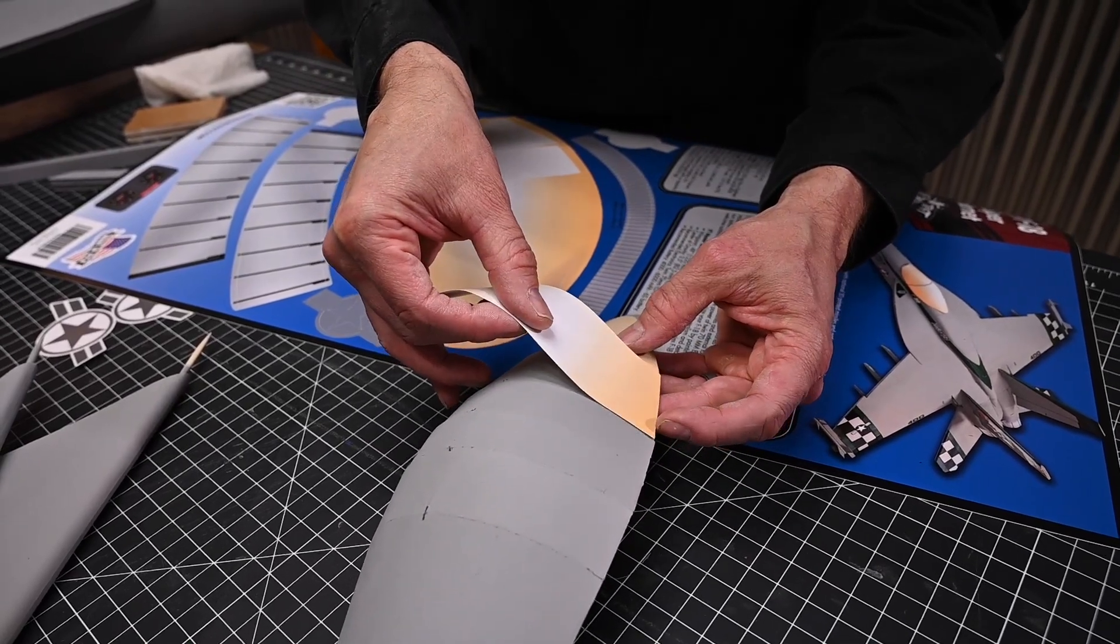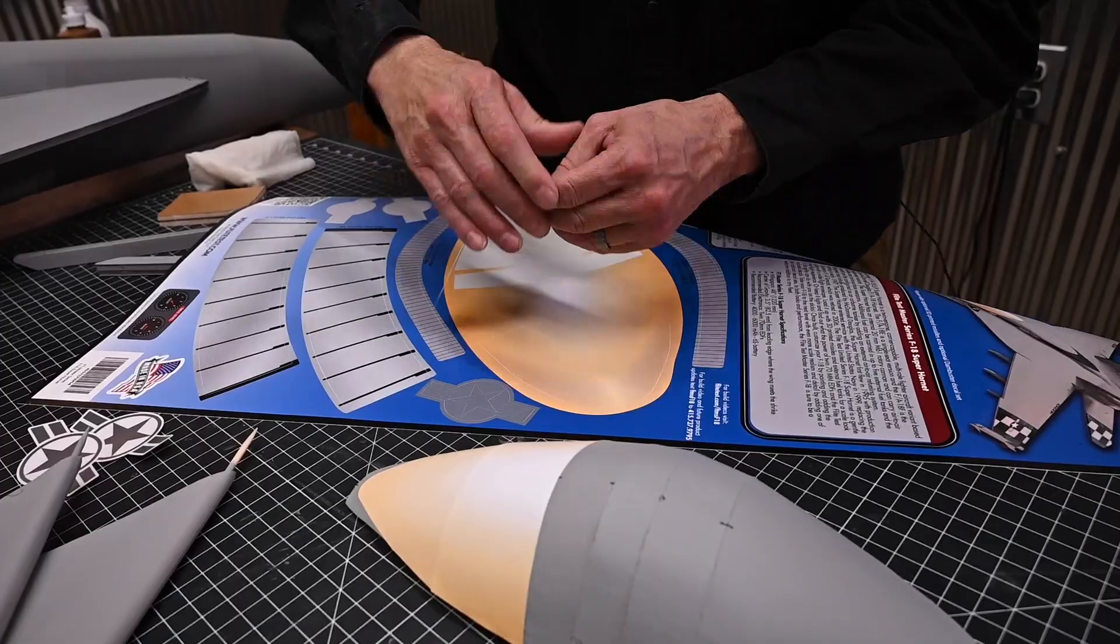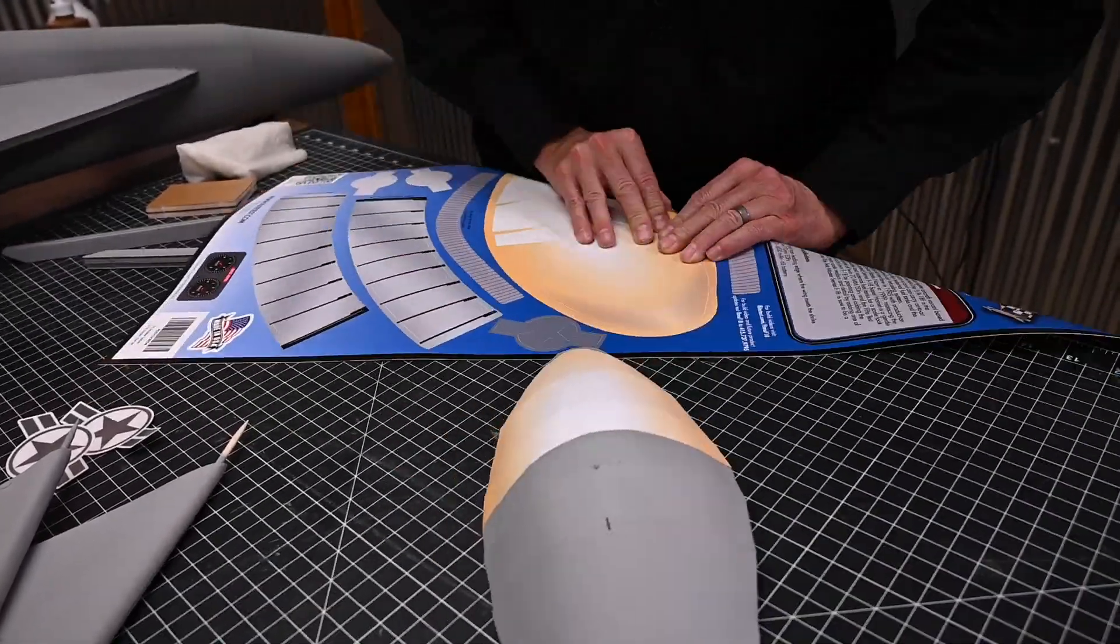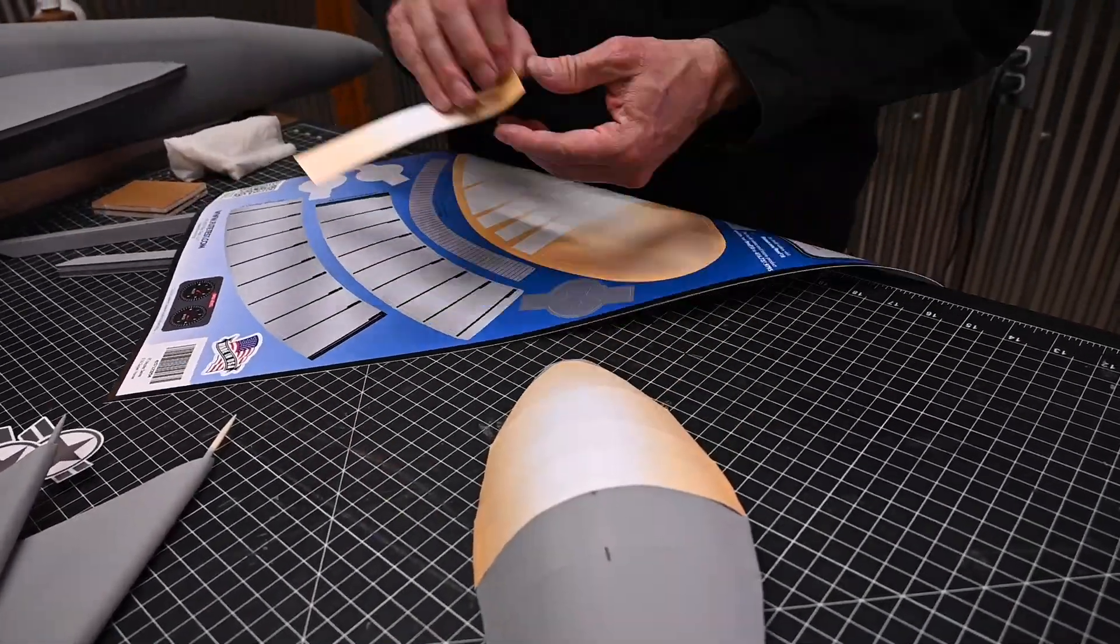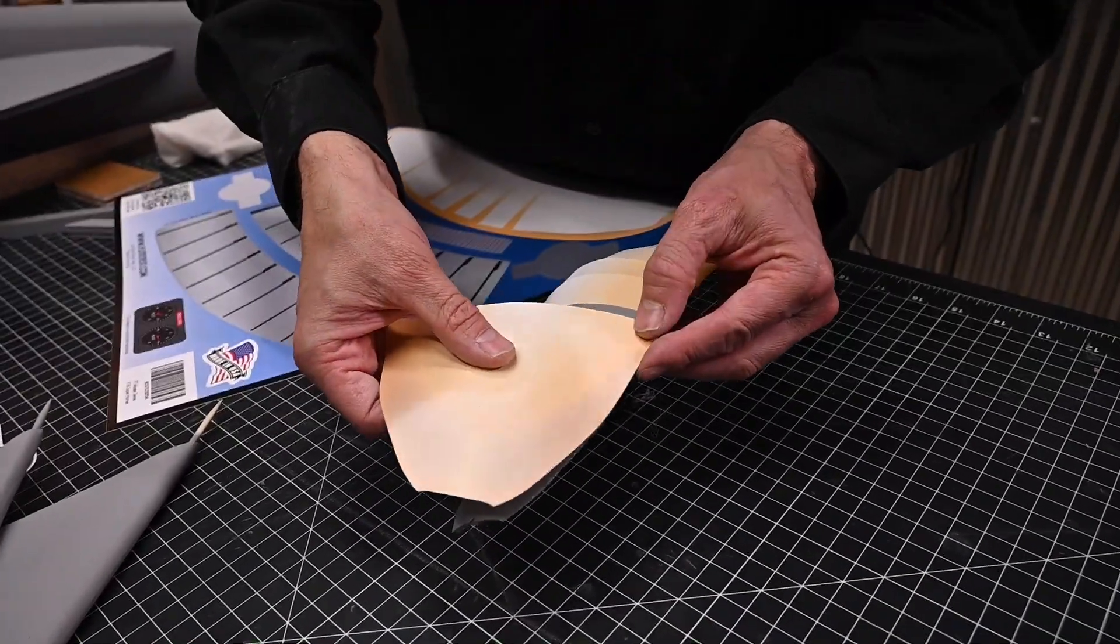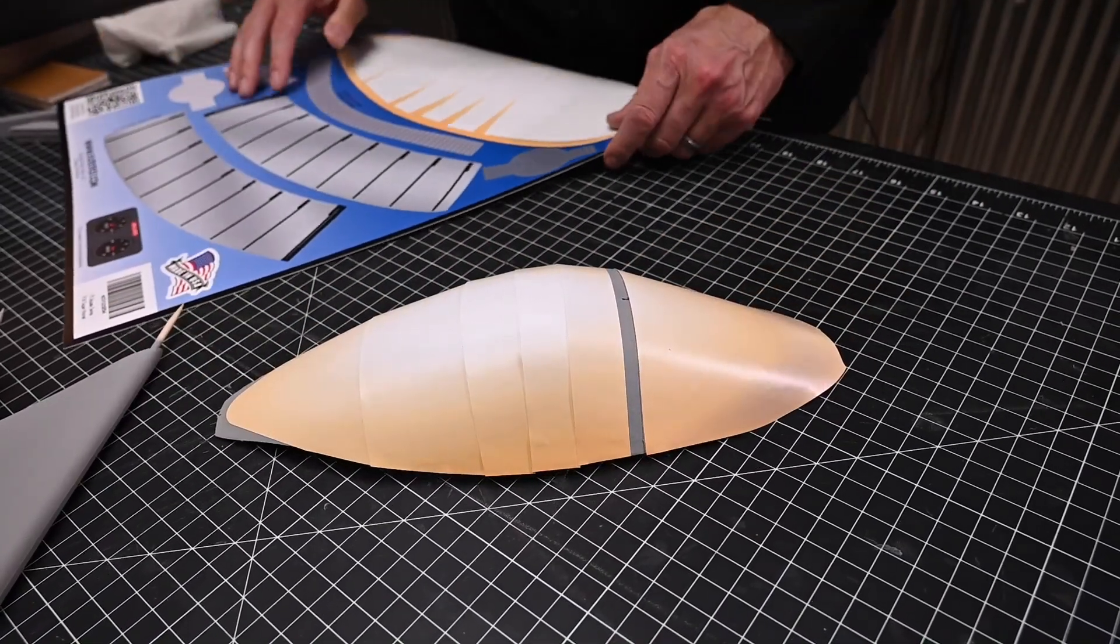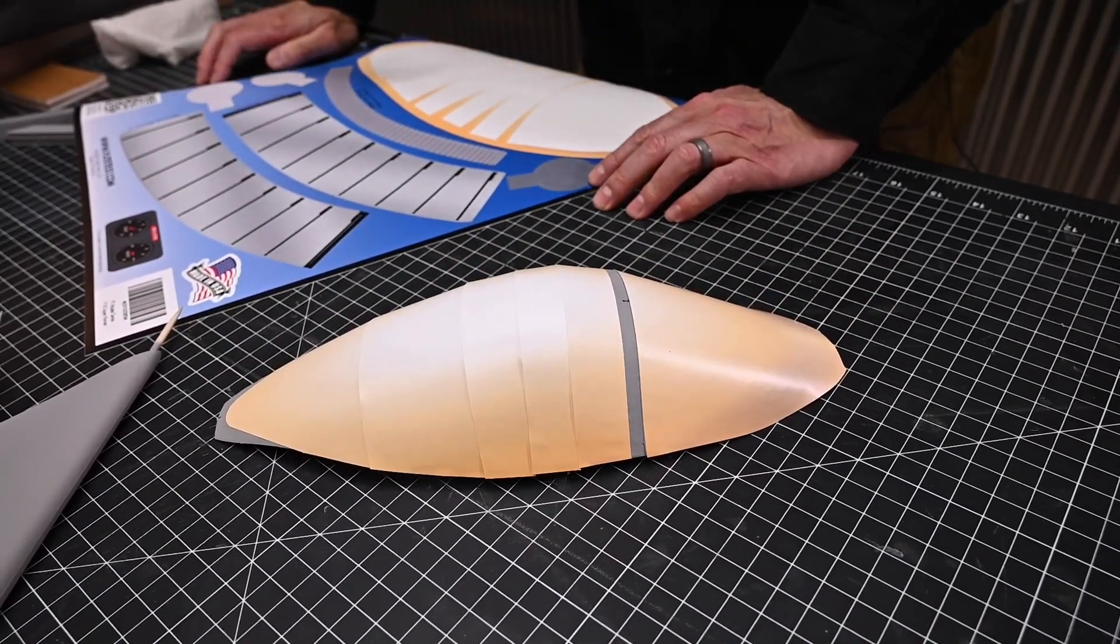You can see that I've had to reposition the vinyl four or five times to get it just like I want. Smooth out any bubbles and I think we're good to go. Now let's apply some clear vinyl.